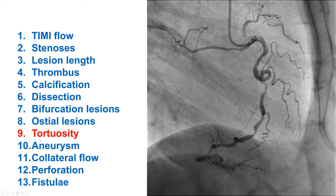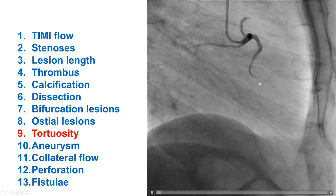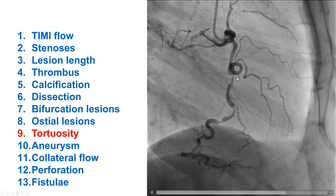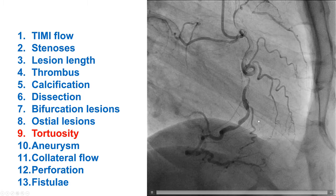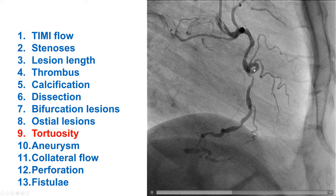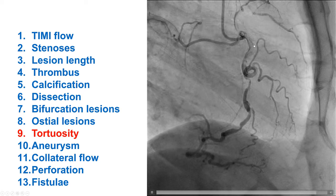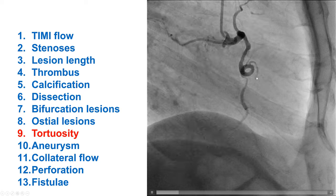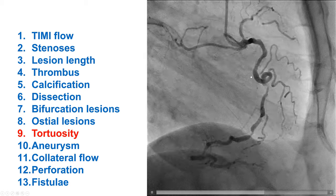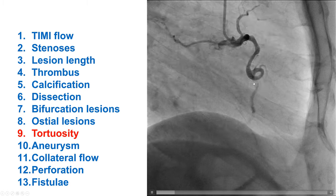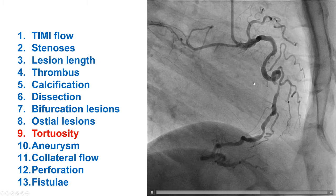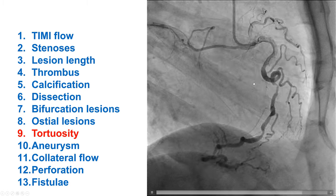Characteristic number nine is tortuosity, which refers to the presence of bends in the coronary artery. This is an example of extreme tortuosity with multiple bends. These lesions can be challenging to wire and deliver equipment to, and this will be discussed in more detail in Chapters 8 and 9.